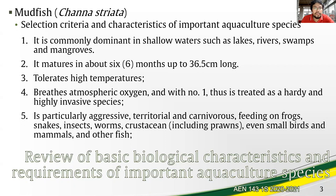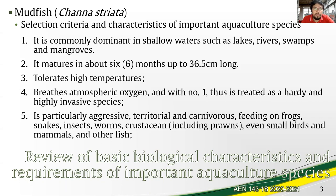The mudfish matures in about six months, reaching around 36.5 centimeters in length. A remarkable characteristic is that it tolerates high temperatures and breathes atmospheric air or oxygen. With these two characteristics, the mudfish is treated as a hardy and even invasive species, and it is listed as a species of least concern on the conservation list, meaning it is not threatened or endangered.